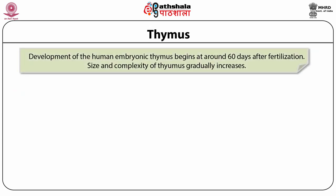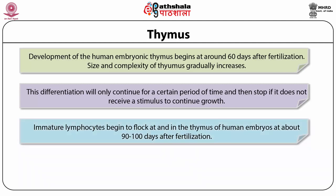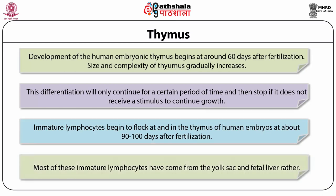Development of human embryonic thymus begins at around 60 days after fertilization. Size and complexity of thymus gradually increases, but this differentiation will only continue for a certain period of time and stop if it does not receive a stimulus for continuous growth. Immature lymphocytes begin to arrive in the thymus of the human embryo at about 90 to 100 days after fertilization, most having come from the yolk sac and the fetal liver.